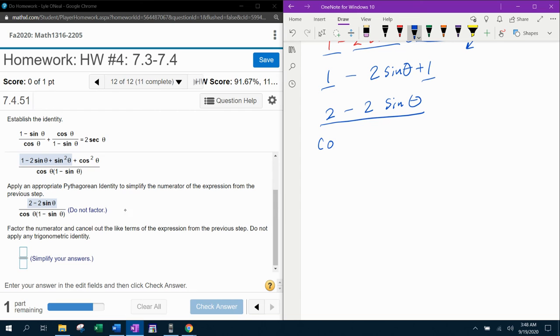So this is my numerator. In the denominator, I've got cosine theta one minus sine theta. Now notice in the numerator, I've got two terms and they both have a common factor of two.